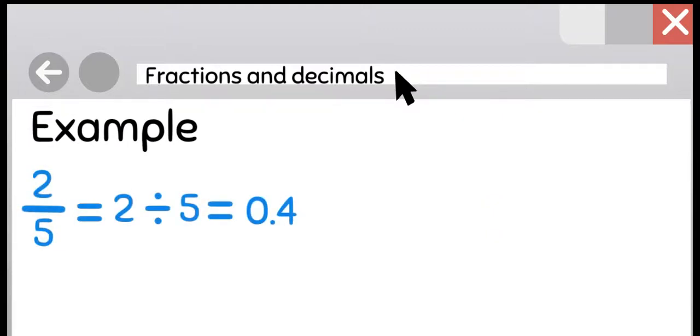2 over 5 equals 2 divided by 5, which is equivalent to 0.4.